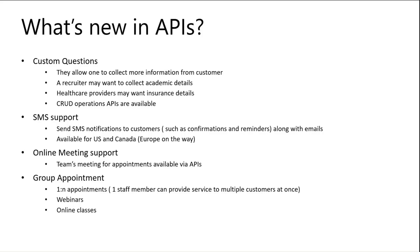The other key feature added was SMS support. SMS notification was one of the most requested features for Bookings, and we recently introduced it in the APIs as well. This allows sending notifications to customers for their appointments — previously only email confirmations and reminders were supported. SMS is currently available only for the US and Canada, with Europe on the way. We also added online meeting support, so appointments can now include a Teams virtual meeting link, configurable via the APIs.